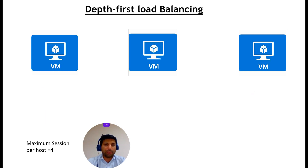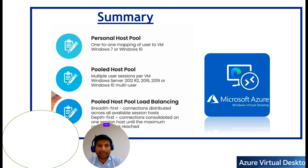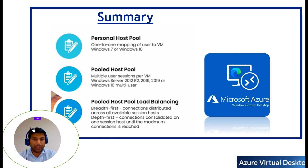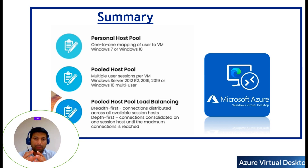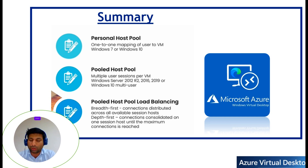I believe you now have an understanding of how breadth-first and depth-first load balancing work for pooled host pools. Let us recap what we learned today: there are two types of host pools — personal host pool and pooled host pool. Personal host pool dedicates a virtual machine to a single end user. In pooled host pool, a multi-user OS such as Windows 10, Windows 11, or a server OS is installed, and that VM is shared among many users. For load balancing, we use either breadth-first or depth-first method. That is it for today — we will meet in the next video. Goodbye.